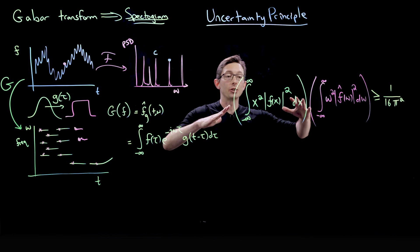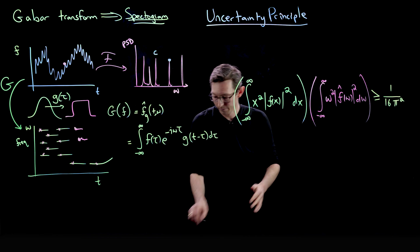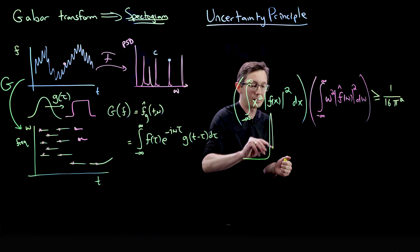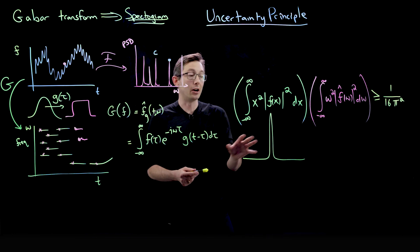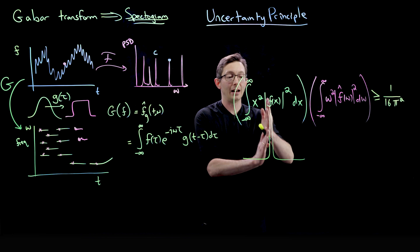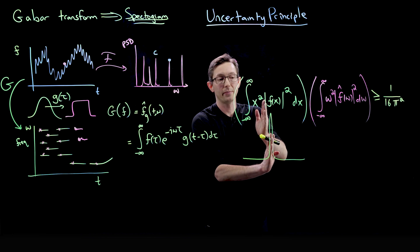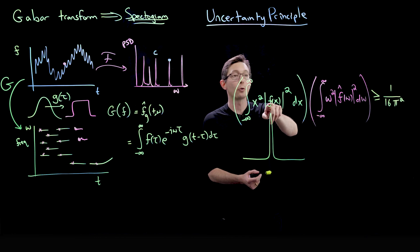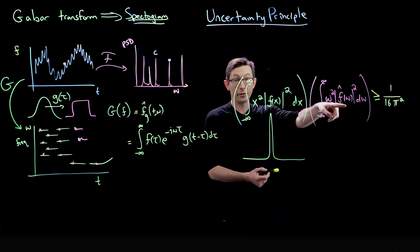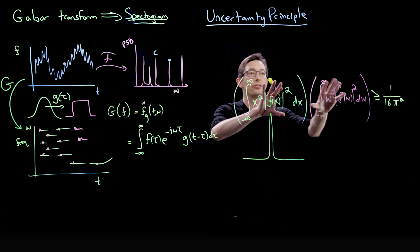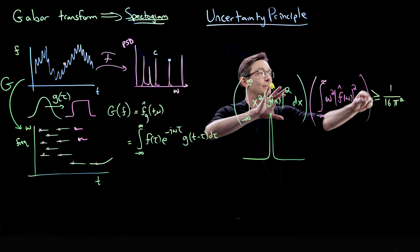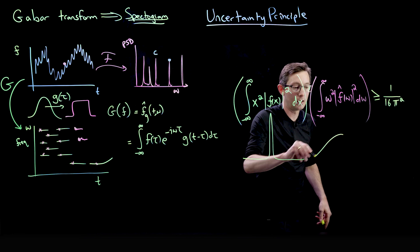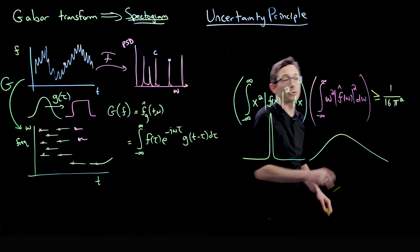If I think of f as a Gaussian that I'm trying to make tighter and tighter and tighter. So if I want to make this ultra tight in space so that I have a lot of resolution and I know exactly where I am in space. What that says is that this Gaussian, so the Fourier transform of a Gaussian is always another Gaussian. It says that for this to be true, for this product to always be greater than this number, this Gaussian has to be pretty spread out.